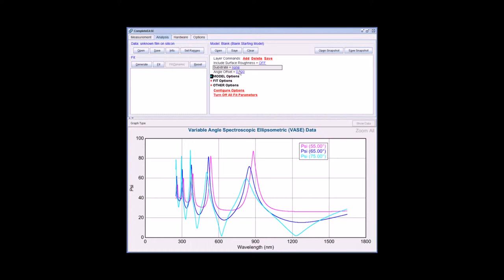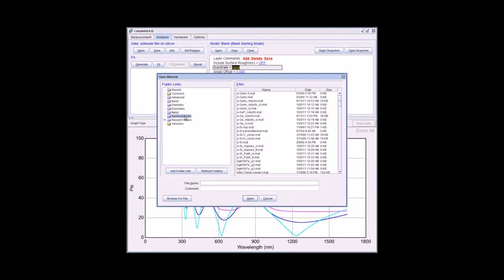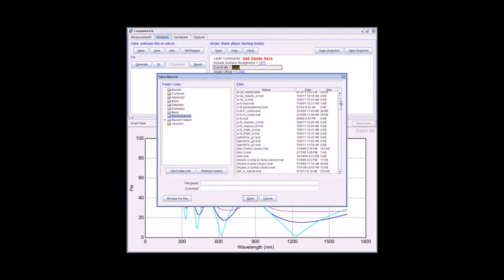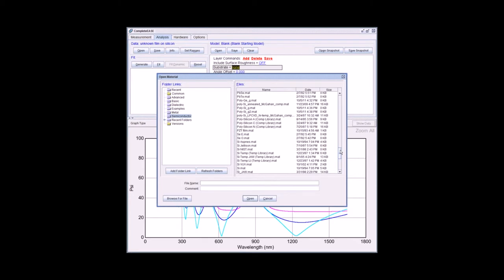We know that the substrate is silicon, so we can enter silicon optical properties for the substrate. Click on the blue letters, none. In the semiconductor folder, you will find various material files for silicon. We usually recommend SI underscore JAW.